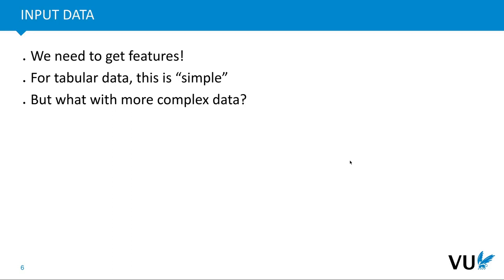Now, when we want to understand how this works, we look back at our basic deep learning knowledge and encounter a problem. We have the image coming in, but what we need for our deep learning model is features. For tabular data — the typical table — this would be simple. But what do we do with more complex data? An image is certainly more complex than a table.